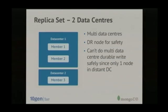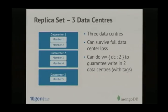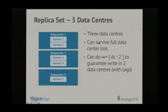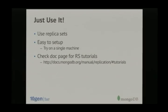For deployment configurations: a single data center with three nodes — primary, secondary, and arbiter — has a single point of failure at the data center level but allows one node to crash. Expanding to two data centers with two nodes in one and one in the other gives disaster recovery but not full failover from the second data center alone. With three data centers you can survive a full data center loss, and you can add a write concern of two data centers to guarantee data has been written to at least two.